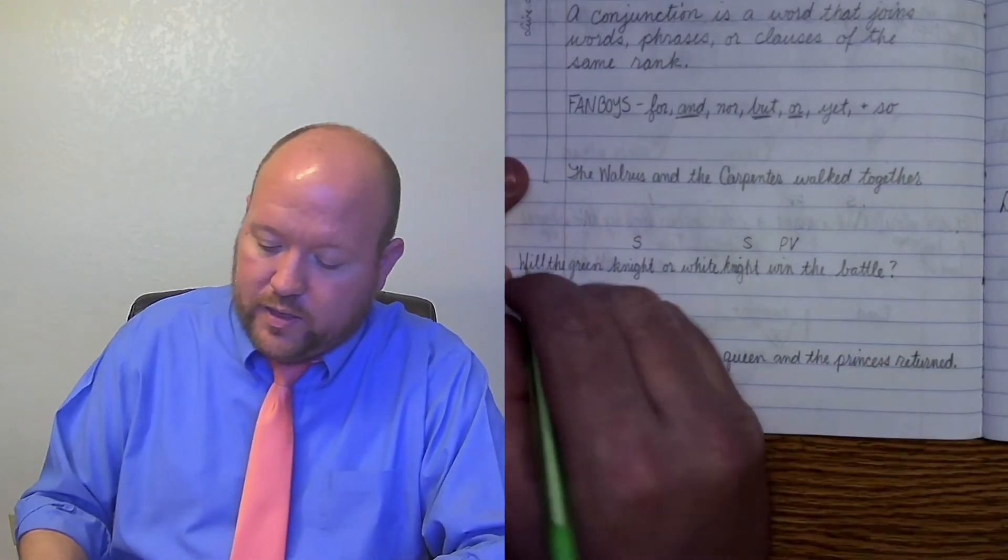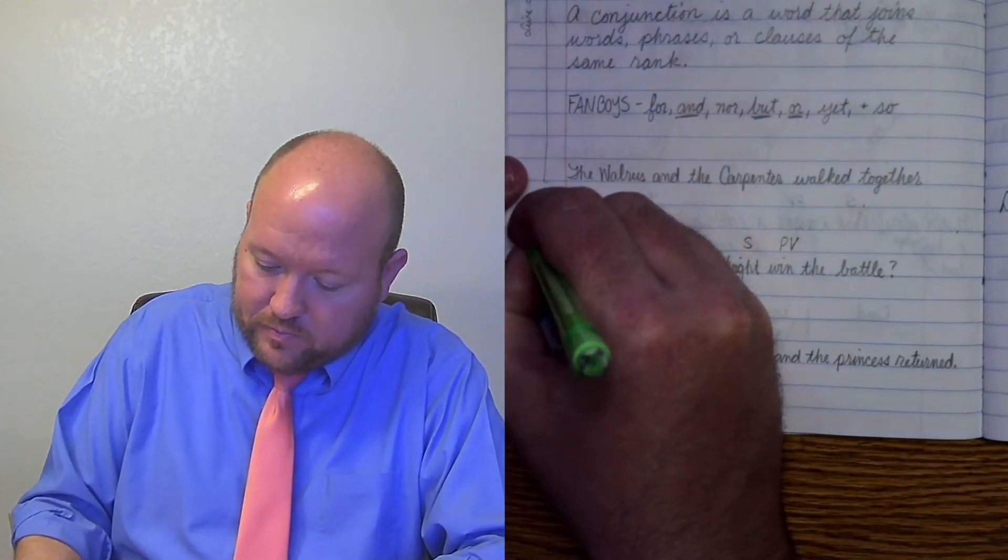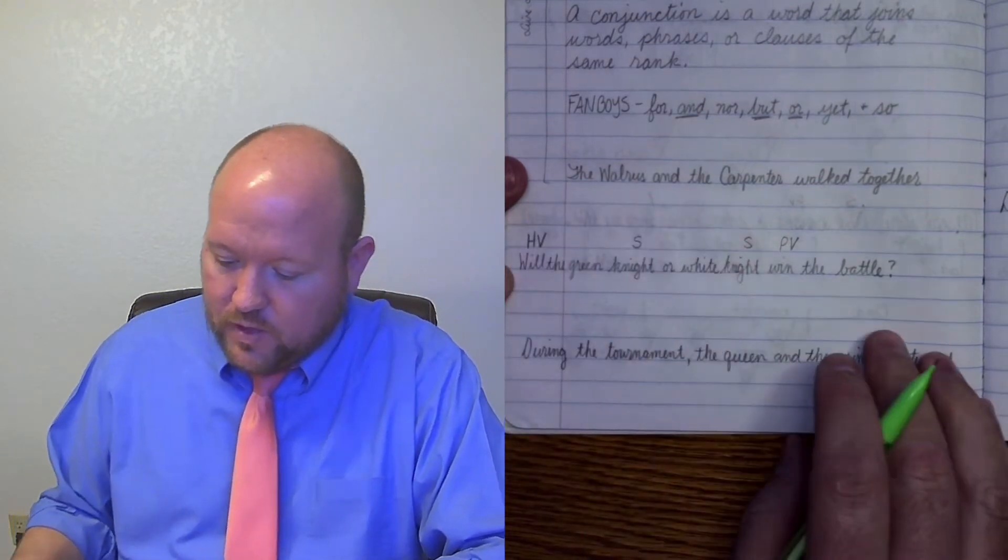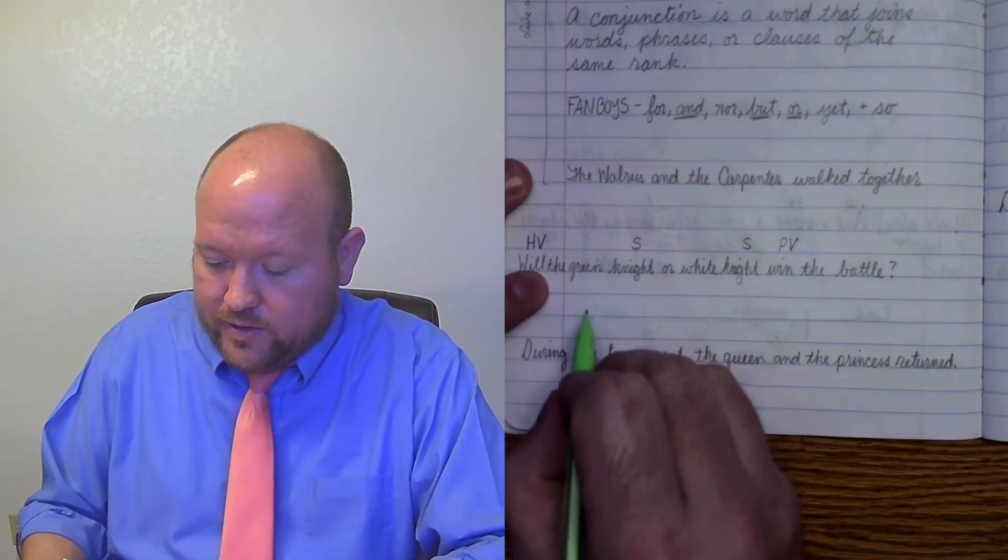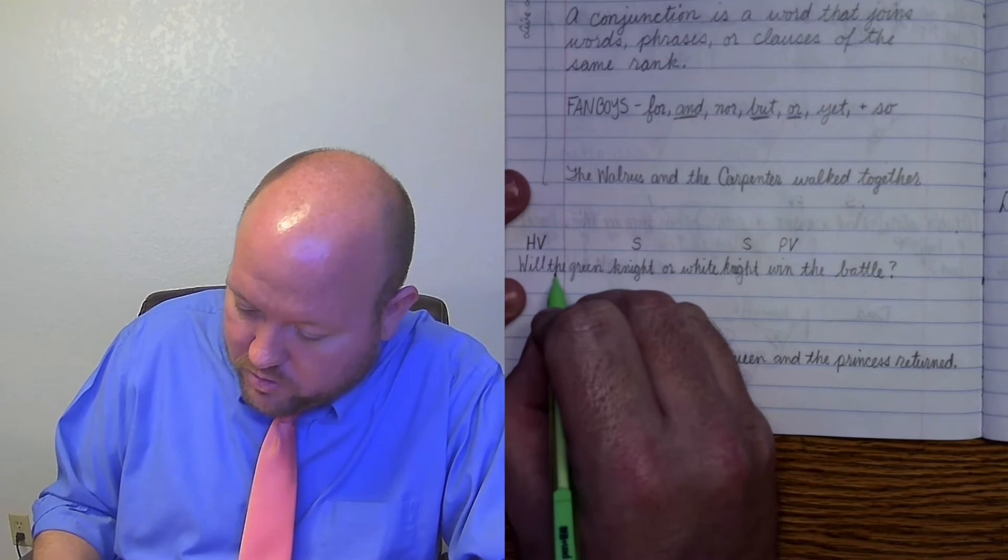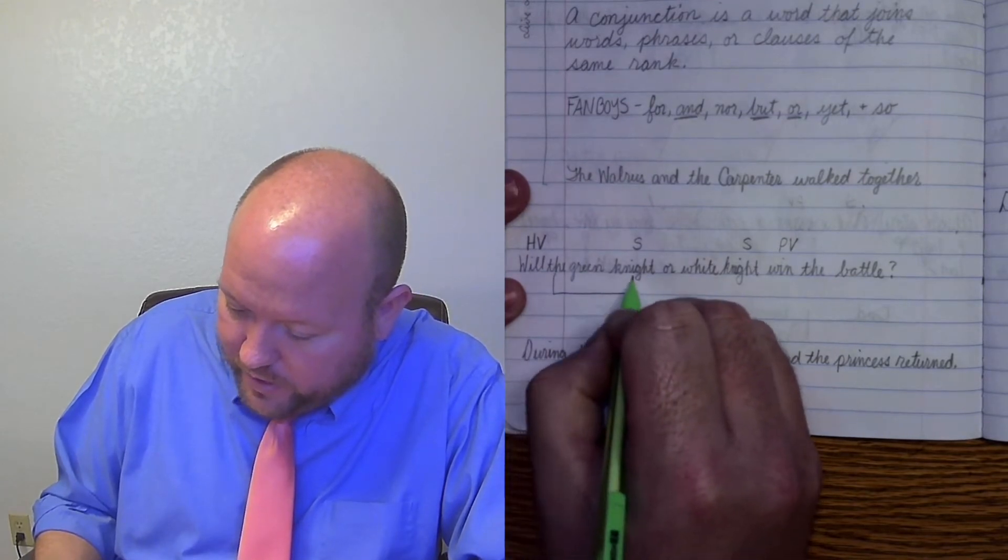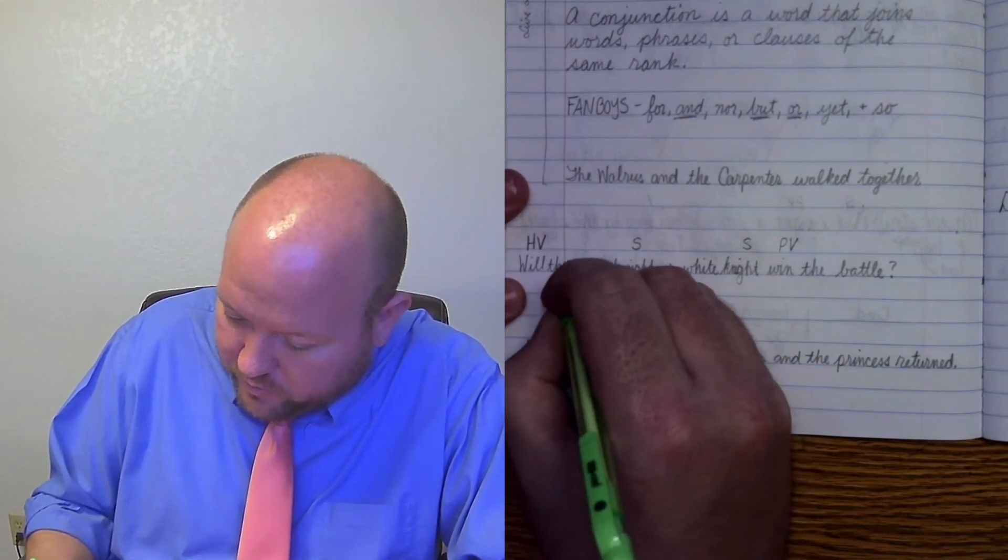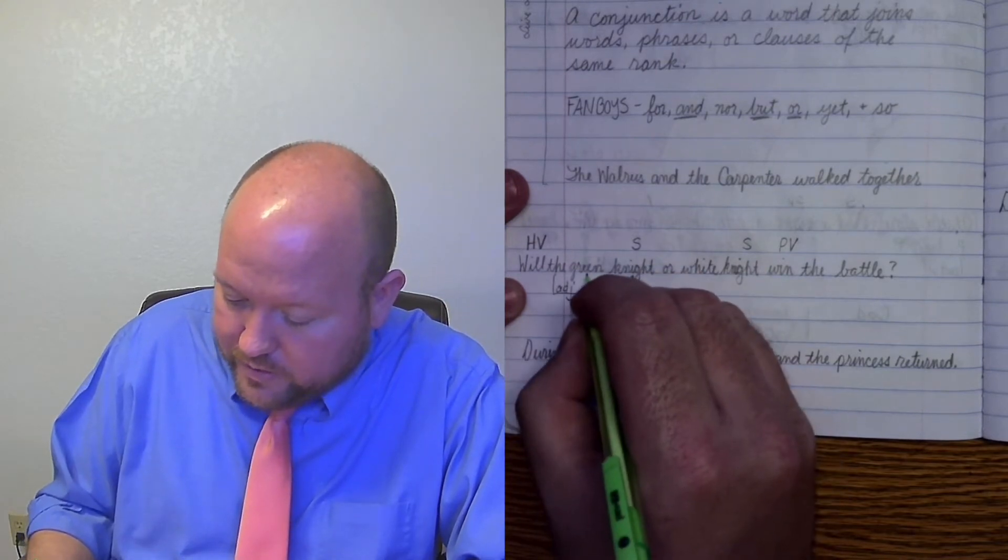Will is what kind of word? Will is a helping verb. All right, the is telling us which knight, so I'm going to draw a line here. This is an adjective. It's an article adjective. And green is telling us which knight. So we can assume that this is a knight that is wearing a green outfit.